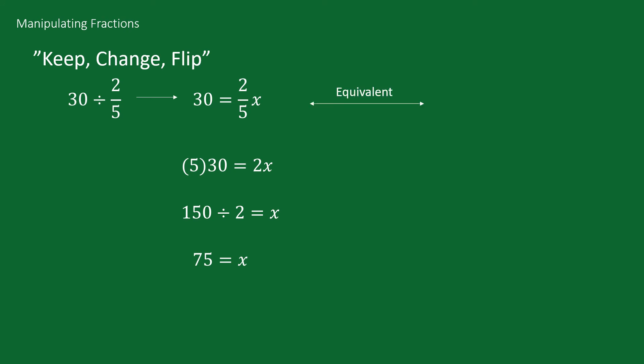This is the same process as 30 times 5 over 2, since we get 30 times 5 over 2. 30 times 5 is 150, and 150 divided by 2 is 75. So instead of having to set up the process every time, we can simply say keep, change the sign, flip the fraction.